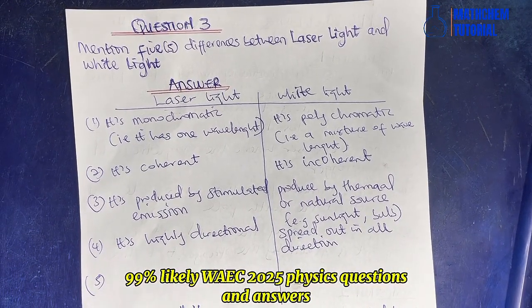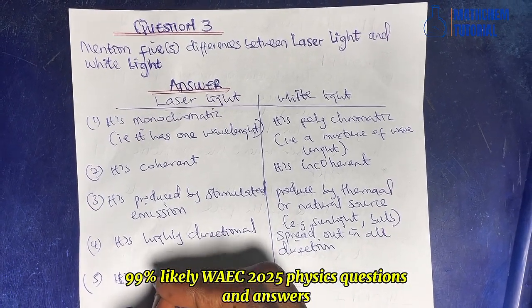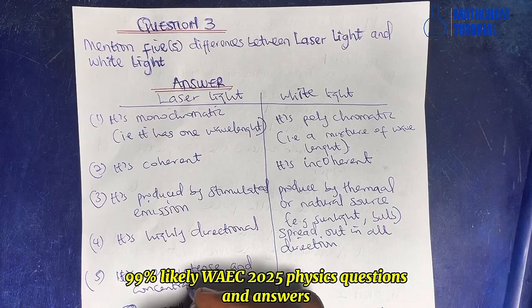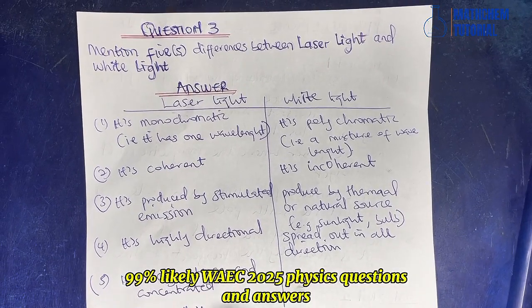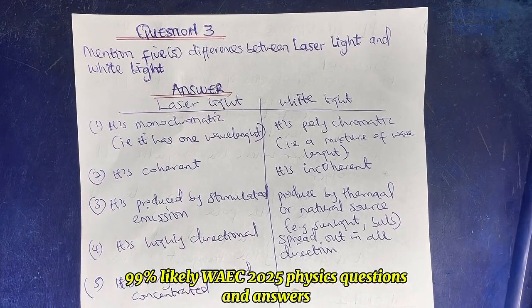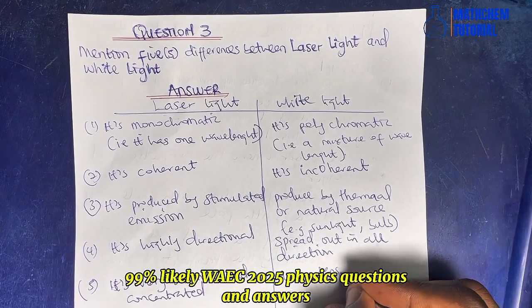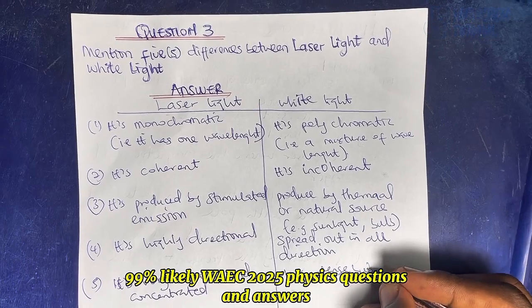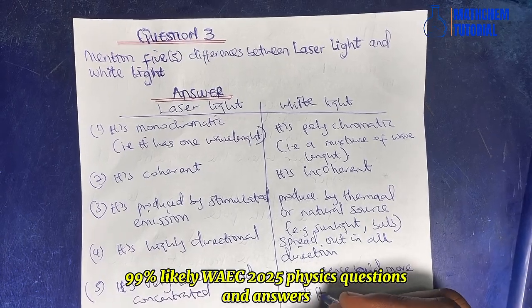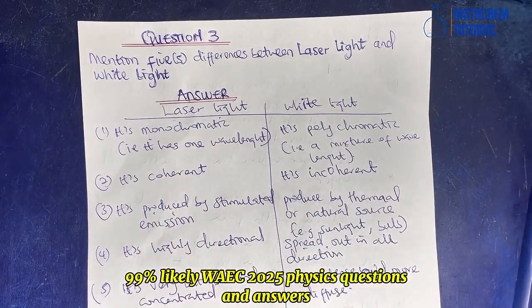Number five, the last difference: laser light is very intense and concentrated. White light is less intense but more diffuse. Those are the five differences between laser light and white light.